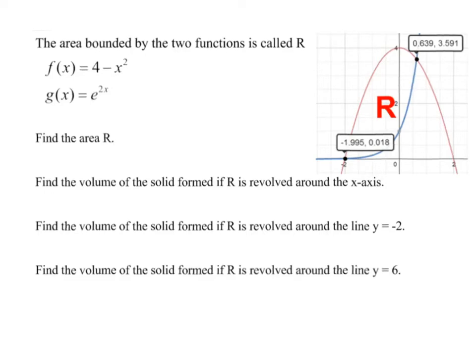To find area, of course, we always just do the top function, which would be f of x minus the bottom function, g of x, between their bounds, which are negative 1.995 to 0.639.